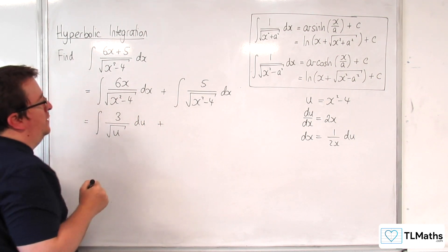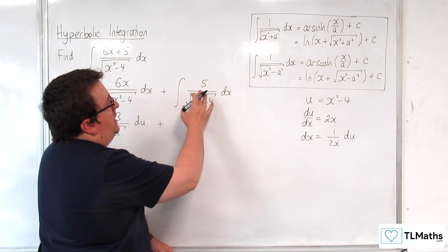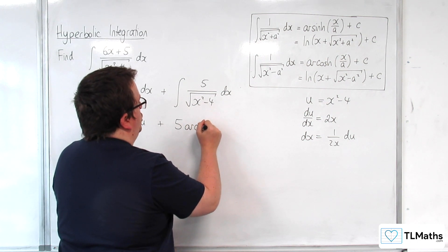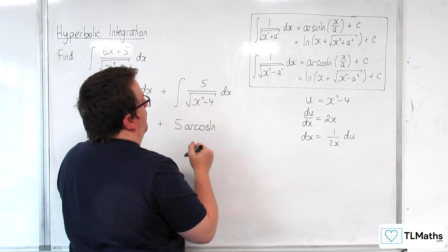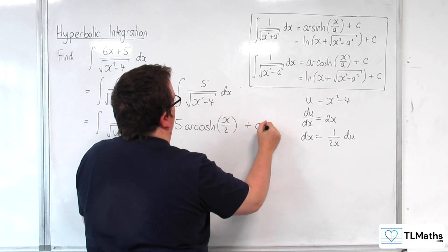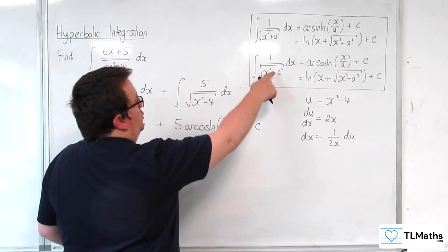So this is going to be equal to u and let's take a look at this one while we're there so this is going to be 5 arc cosh of x over 2 plus some constant c. Okay match it up with that.